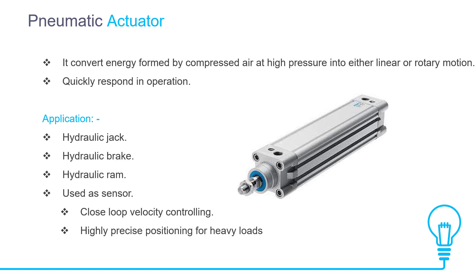Pneumatic actuators convert energy in the form of compressed air into mechanical motion. Pressurized gas or compressed air enters a chamber, building up pressure inside. Once this pressure exceeds the required pressure levels relative to the atmospheric pressure outside, it makes the piston or gear move kinetically in a controlled manner, leading to straight or circular mechanical motion. Examples include lifting devices and humanoid robots with arms and limbs. Pneumatic actuator applications include: hydraulic jack, hydraulic brake, hydraulic ram, use as a sensor, closed-loop velocity controlling, and highly precise positioning for heavy loads.